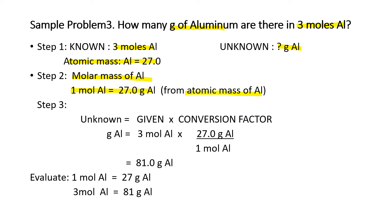Step 3: using the conversion factor, calculate the grams of aluminum. The given is 3 moles of aluminum, times the conversion factor: 27 grams of aluminum over 1 mole of aluminum. The unit of the given — mole of aluminum — must be on the denominator. Multiplying 3 times 27 gives 81 grams of aluminum. It makes sense: 1 mole is 27 grams, so 3 moles is 81 grams — three times the mass of 1 mole.